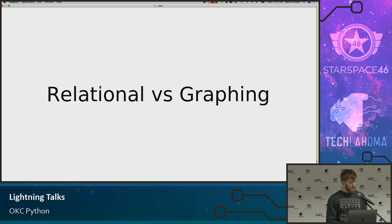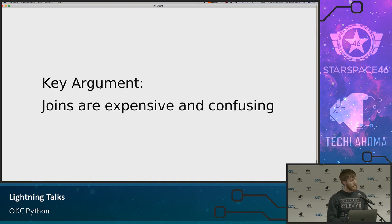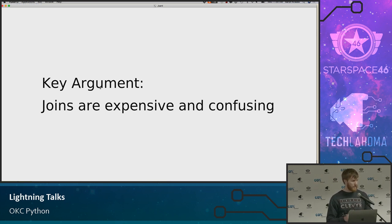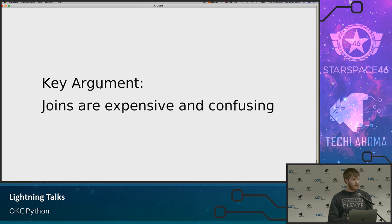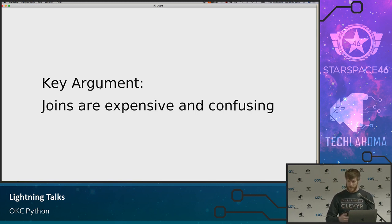The key argument that graph databases benefit from is that your joins are very expensive and confusing in a relational database. They might not seem that way because you're so used to it, but if you're trying to explain to someone why you have to join five tables together to get five columns out of various tables, it's a tough argument to make. With graph databases, you don't have to do that.